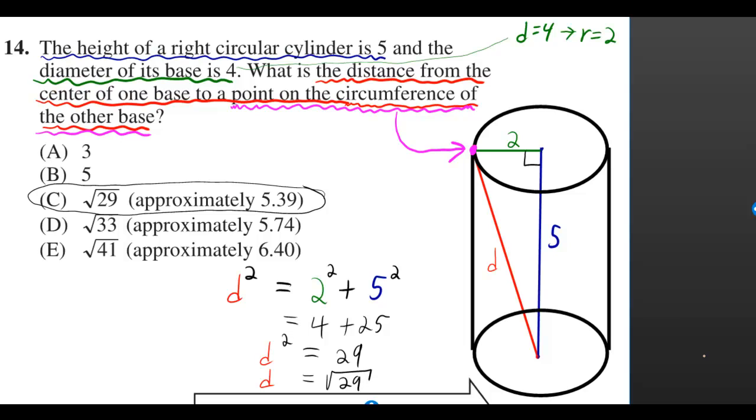The height of a right circular cylinder is 5 and the diameter of its base is 4. What is the distance from the center of one base to a point on the circumference of the other base?